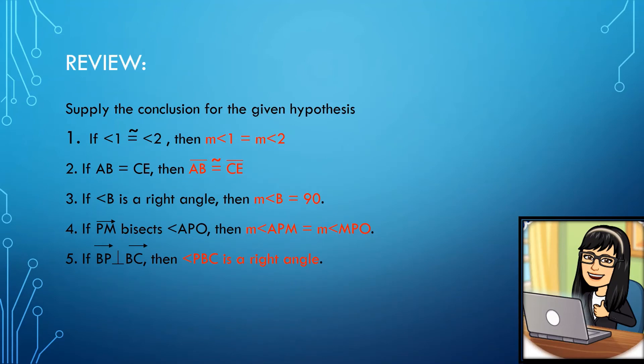Aside from knowing the postulates, theorems, properties of equality and congruence, as well as definitions of basic geometric terms, you should also be equipped at supplying the conclusion for a given hypothesis, because this concept will help us in making the statements in the two-column proof. Let's try to work on this simple activity — supply the conclusion for the given hypothesis. Remember: when we create a conclusion, we have to look for a clue in the given hypothesis.